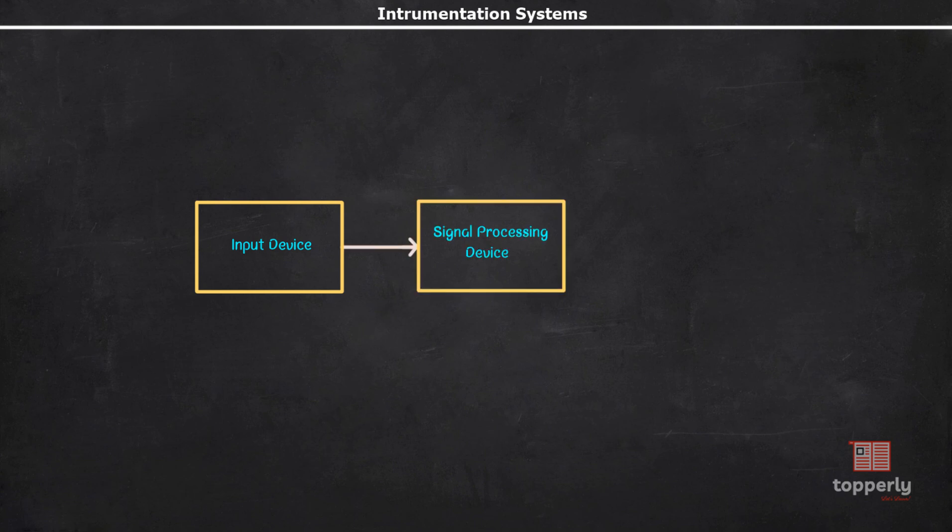We know that any measurement system consists of a number of components which work together to perform the measurement and produce the reading. In general, we have an input device, a signal processing device, and an output device. Once the input device receives measurement or the signal to be measured, this signal is then processed by the signal processing unit and the output device displays the reading.